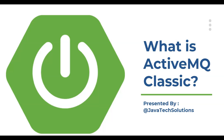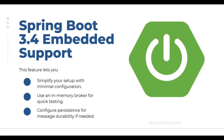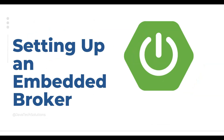You may have also heard about ActiveMQ Artemis. While Artemis is optimized for high-performance scenarios, Classic remains a go-to choice for its simplicity, stability, and rich protocol support. Now let's talk about the new features available in Spring Boot 3.4. With built-in support for embedding ActiveMQ Classic, you no longer need to install and configure an external broker for local development or lightweight use cases. This feature lets you simplify your setup with minimal configuration, use an in-memory broker for quick testing, and configure persistence for message durability if needed.